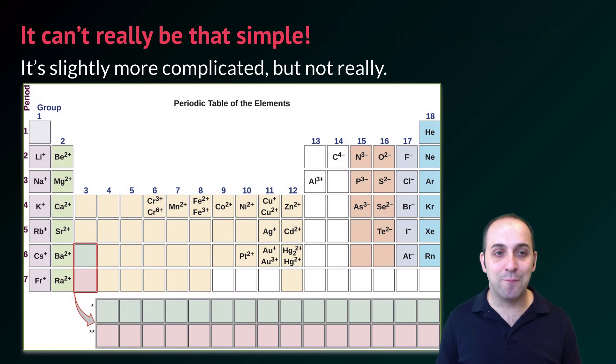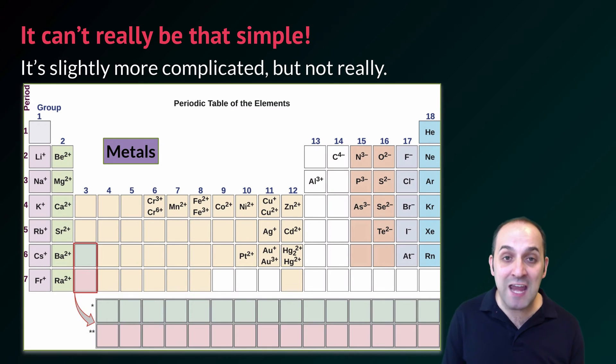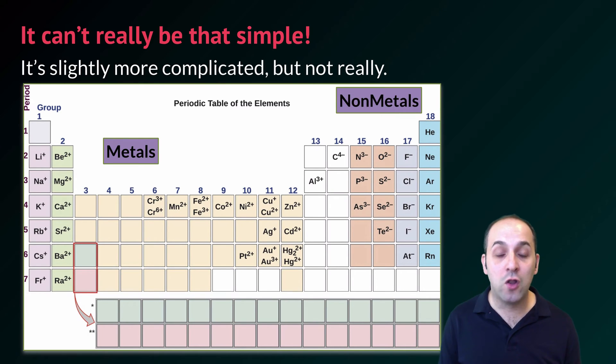I know you think it really can't be that simple, and it is slightly more complicated than this, as we'll talk about in our next unit, but it's not really that much more complicated. If we look at the periodic table of elements, you can see the charges that the different elements have. Elements that have a positive charge have lost valence electrons, and they're what we call metals. Elements that have a negative charge have gained valence electrons, and they're what we call non-metals. This is one of the major divisions in the periodic table, as we will discuss in our next unit.